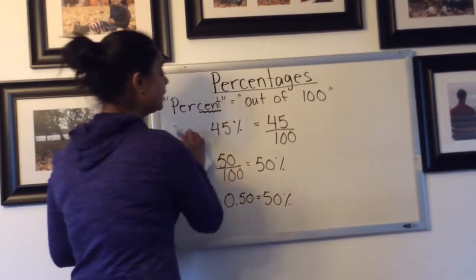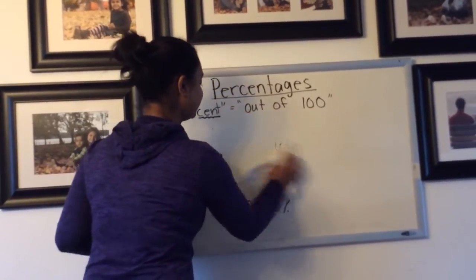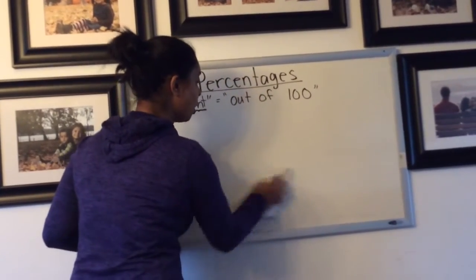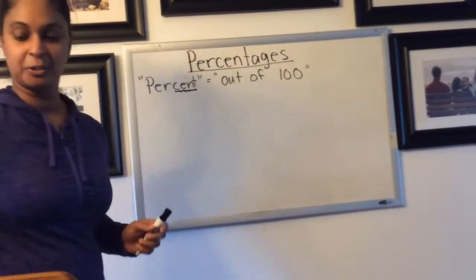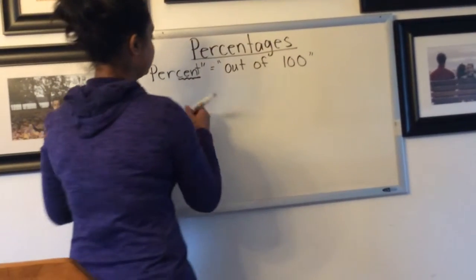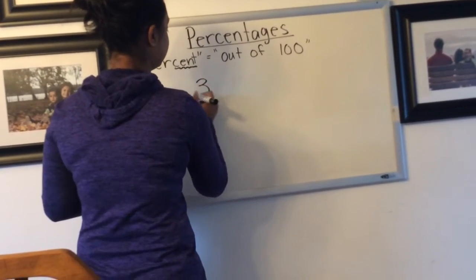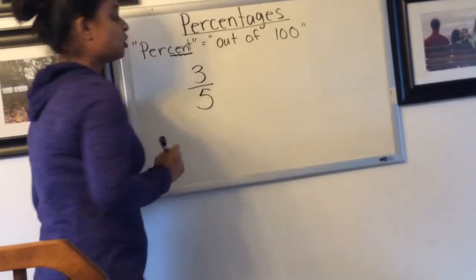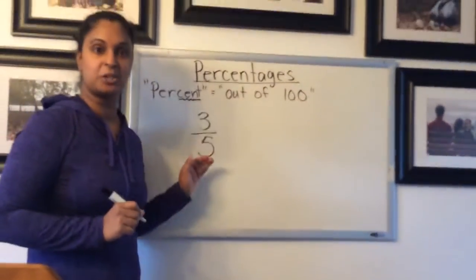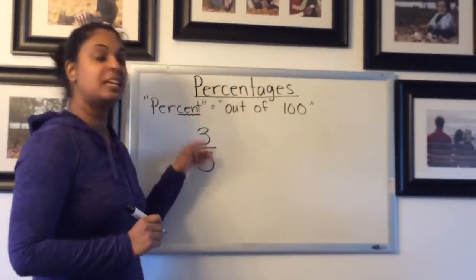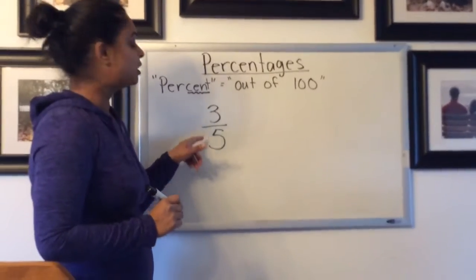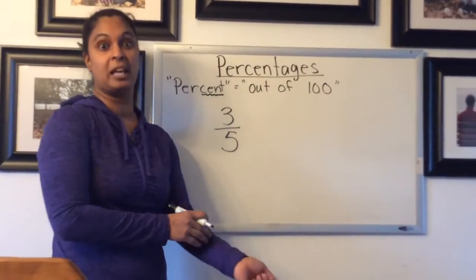Where percentages get a little trickier is if the denominator is not 100. For example, 3 fifths. We're not sure about the percentage right now because this is not out of 100. The denominator is not 100, the denominator is 5.